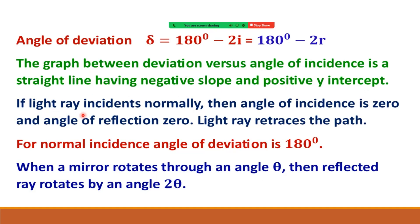When the angle of incidence is 0, angle of reflection is also 0 and the light retraces its path — deviation is 180°. When a mirror rotates through angle θ, the reflected ray rotates by angle 2θ.